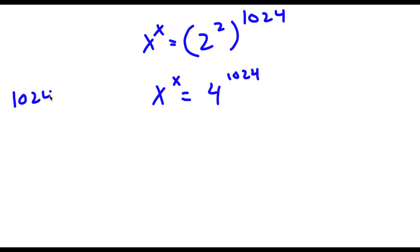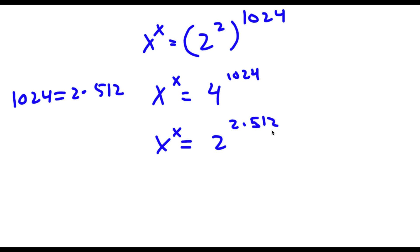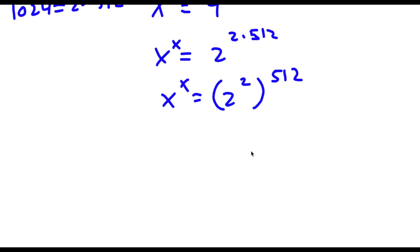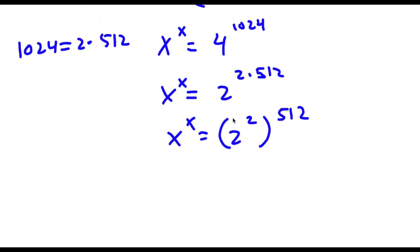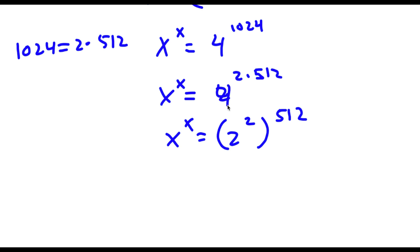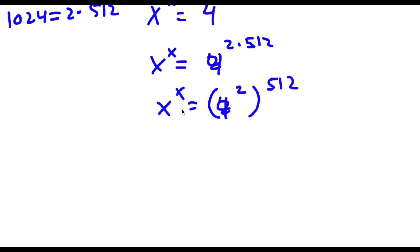Now, 1024 is the same thing as 2 times 512. So now I have x to the power of x is equal to 2 to the power of 2 times 512. And now this is the same thing as 2 to the power of 2 to the power of 512, which gives us 4. Now 4 to the power of 2 is equal to 16. So now I have x to the power of x is equal to 16 to the power of 512.